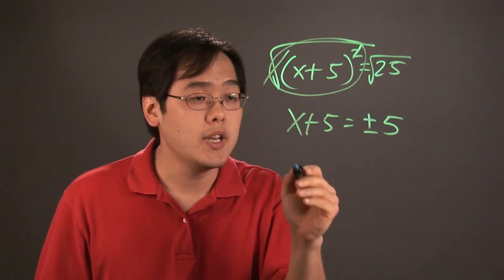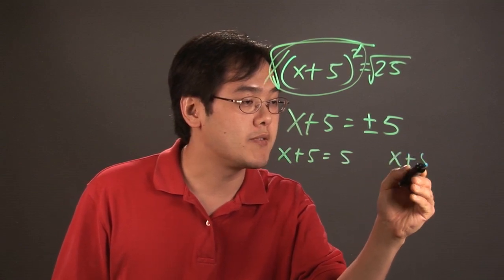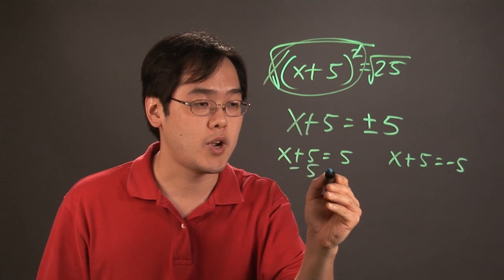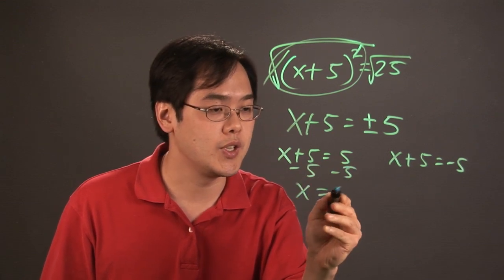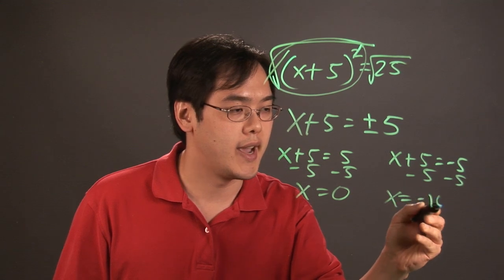So at this point you simply want to separate into two equations: x + 5 = 5, and x + 5 = -5, and then go from there. Subtract 5 on both sides, you have x = 0, and then subtract 5 on this side, you have x = -10.